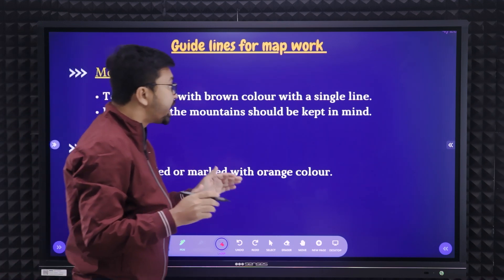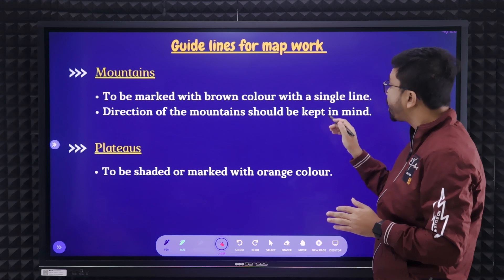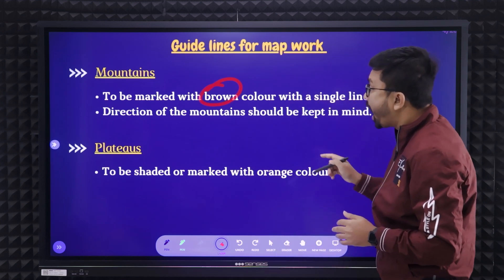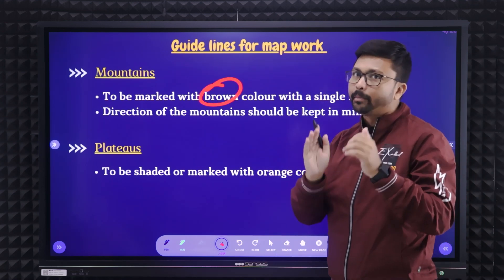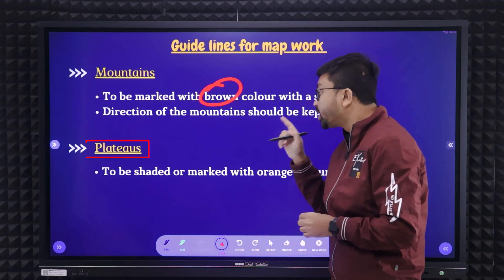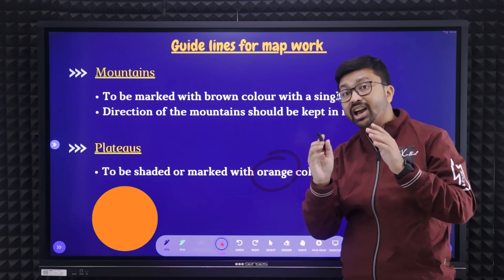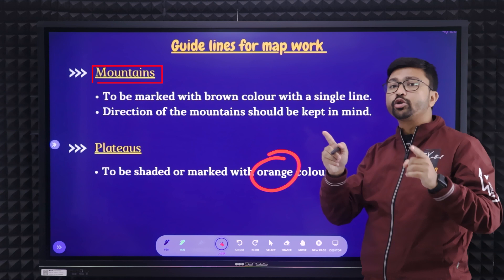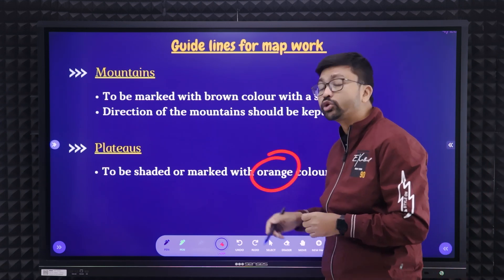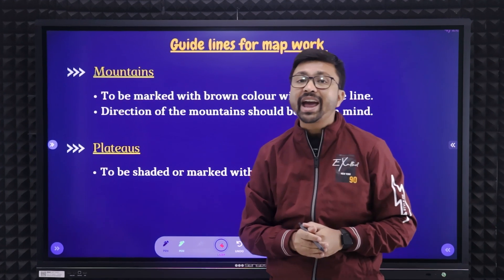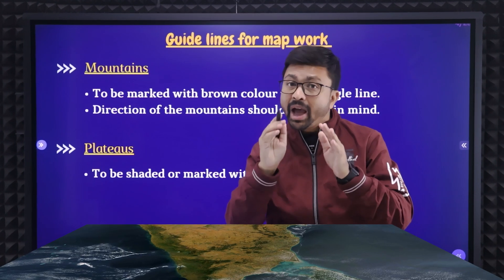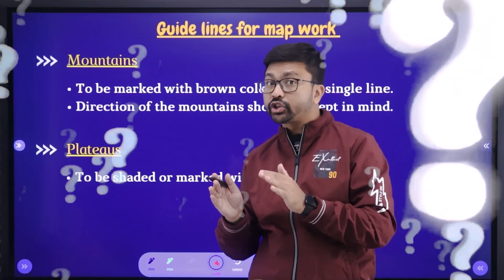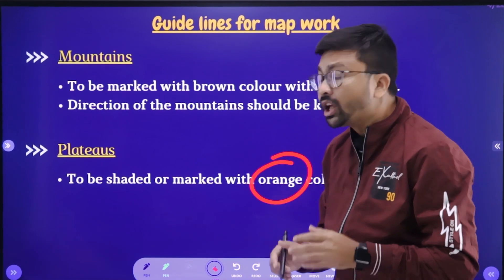Here are guidelines for map work. Mountains need to be marked with a brown color with a single line, and you should keep in mind the direction of the mountain for marking it. Plateaus need to be marked with orange color. These specific colors are very important. For mountains, although you can use black color, I suggest you use brown — because on the map page the Indian map along with the river line will already be marked in black, so there may be confusion. That's why it's better to use brown color.